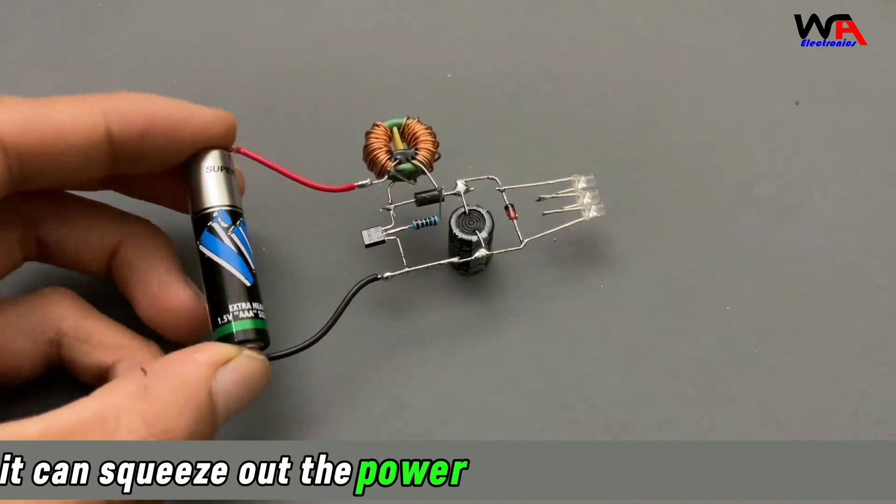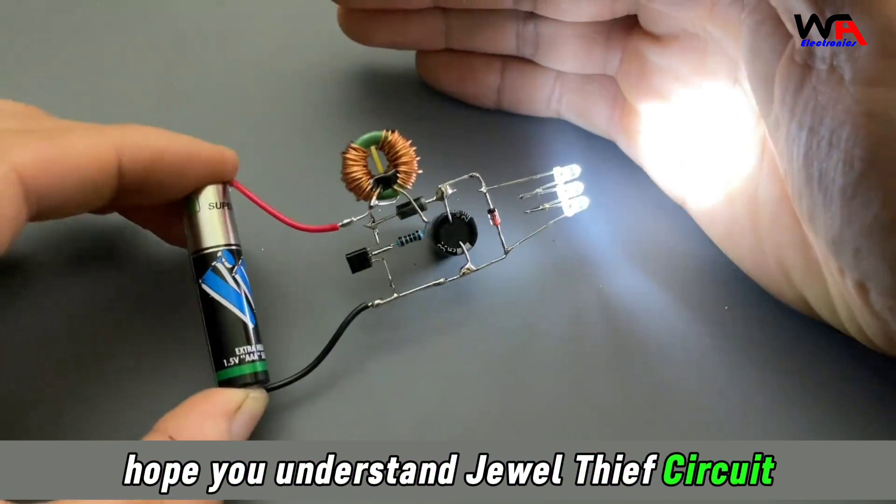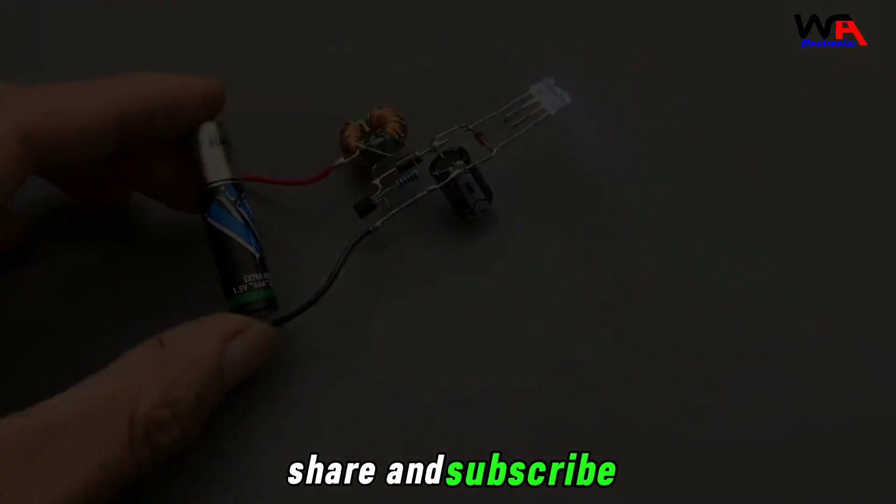It can squeeze out the power of unusable used batteries. Hope you understand the Joule Thief Circuit. Like, comment, share, and subscribe.